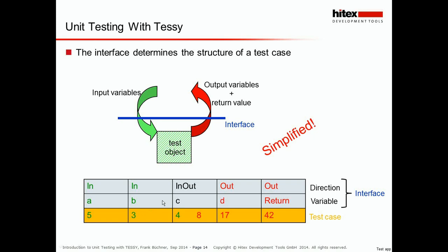The interface gives us the structure of a test case. A test case consists of values for the input variables prior to the test and expected values for the output variables after the test. For example, a test case might say: prior to the test A should be 5, B should be 3, and C should be 4; after the test C should be 8, D should be 17, and the return value should be 42. Specifying the values of test cases and how many test cases you need is the only work you have to put in when working with TESI — everything else is done more or less automatically.